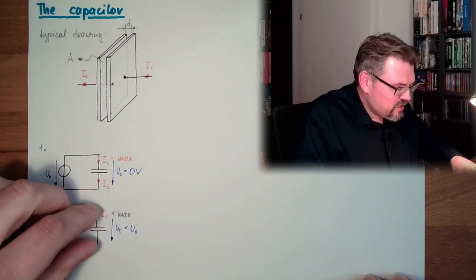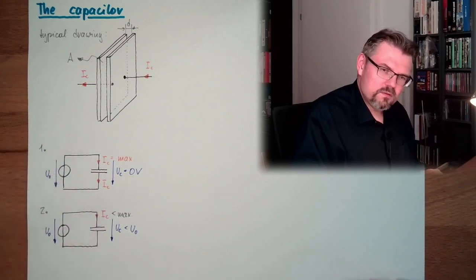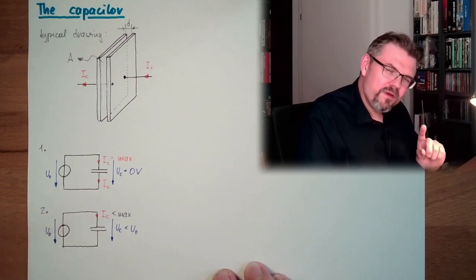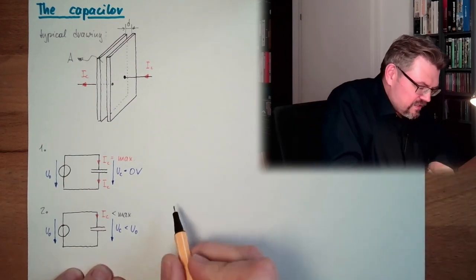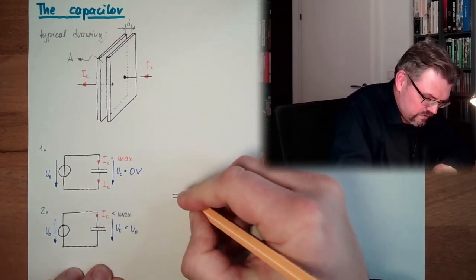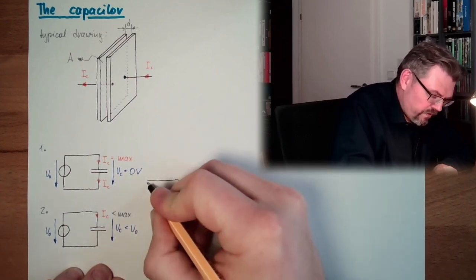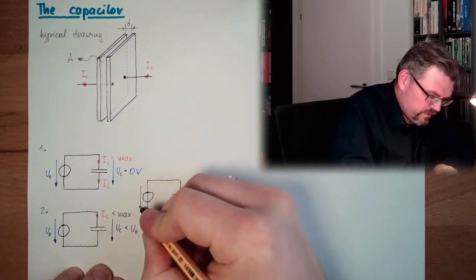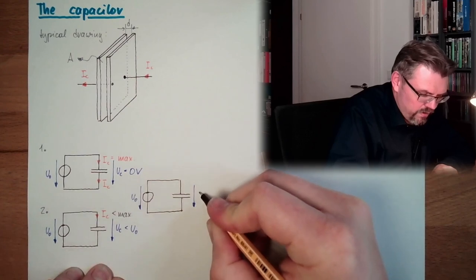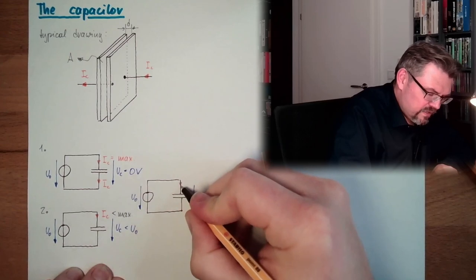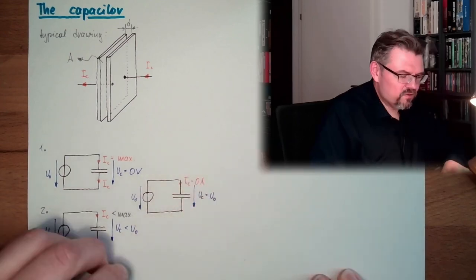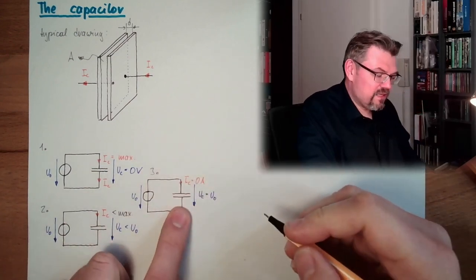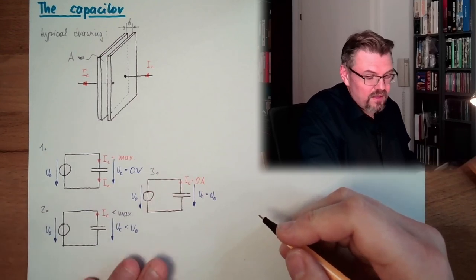This means the charging of the capacitor will slow down. When does it come to an end? Between the two connections, no current will flow if we have the same potential. So in the end, we have here UC which is now equal to U0. And this means IC is zero amps. Now our capacitor is fully charged, and nothing will change.